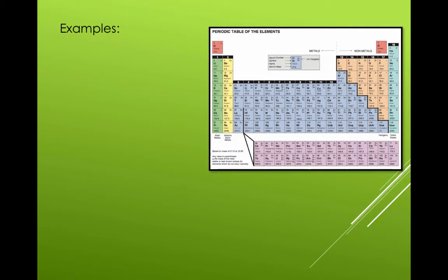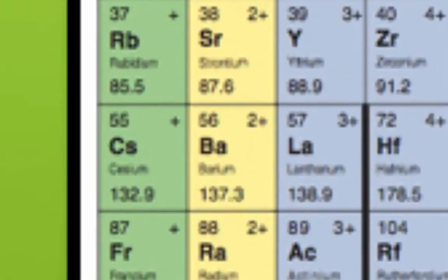Let's look at some examples. Ba bracket OH bracket 2. First the metal, then the polyatomic. Barium hydroxide. Barium is an alkaline metal and only has a charge of plus 2, so roman numerals are not required.